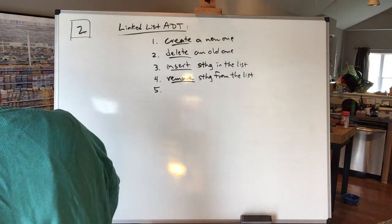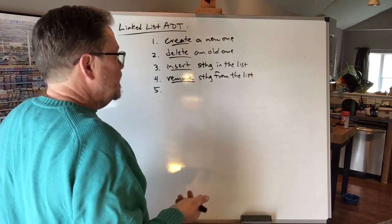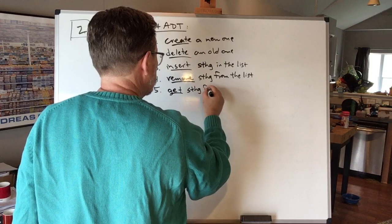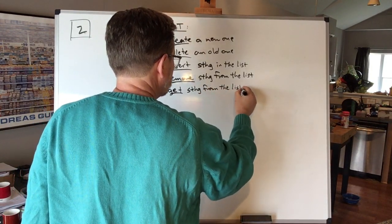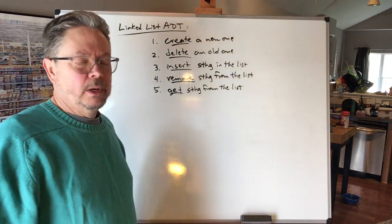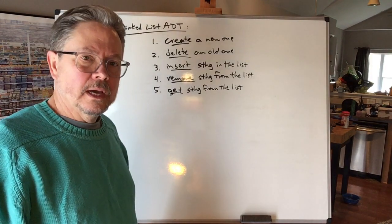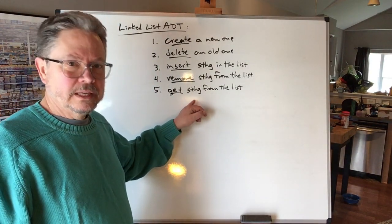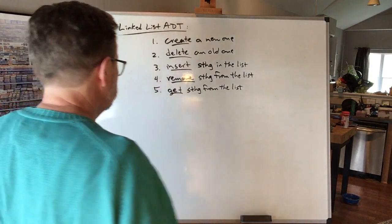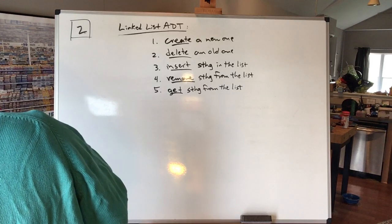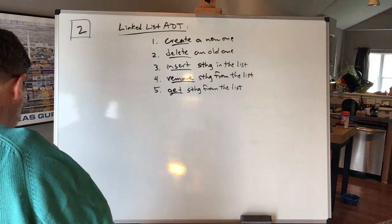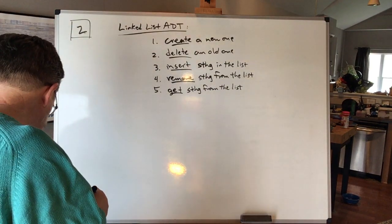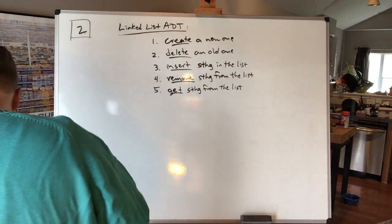When we put something in, maybe while it's there we want to take a look at it. You might wonder why that's a separate operation — we might put a bunch of stuff in the list and need to reference it later without being ready to take it out yet. So getting something from the list is a completely separate operation from removing it. That's enough to get the ball rolling on an abstract data type.